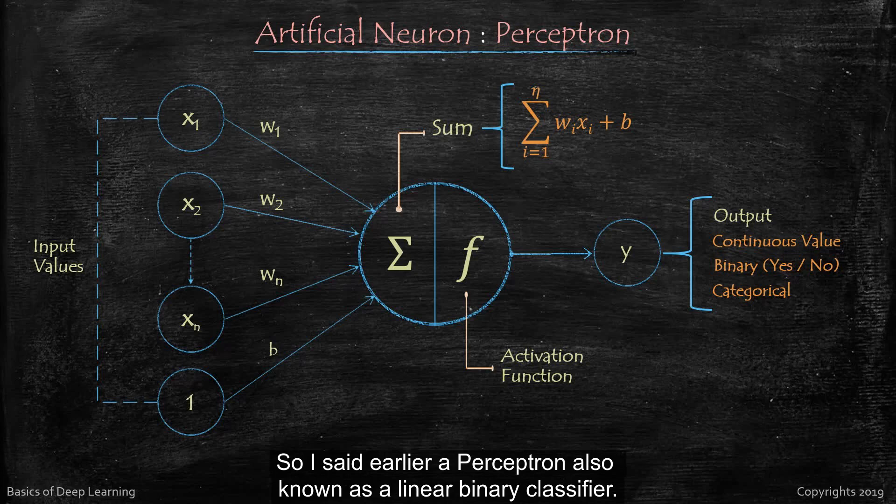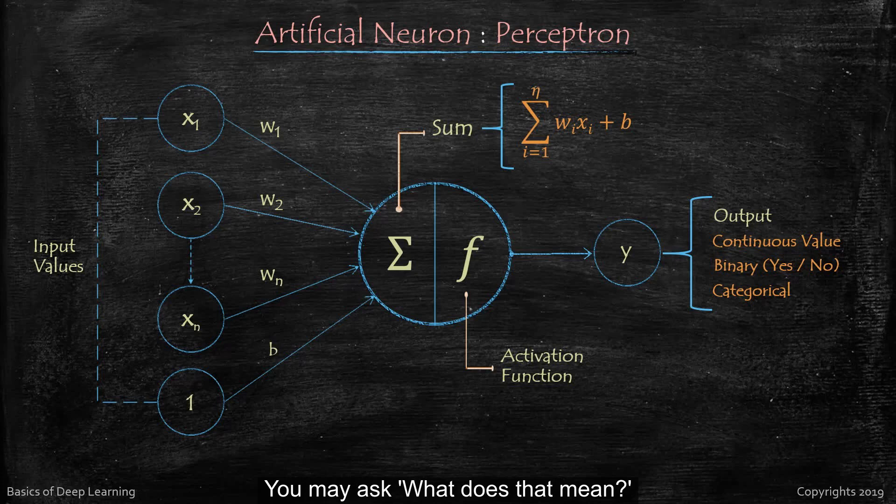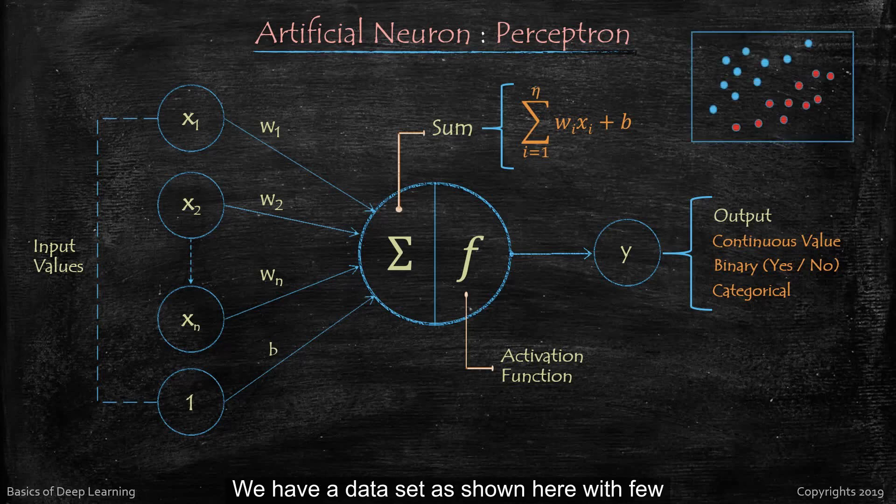So as said earlier, a perceptron also known as a linear binary classifier. You may ask what does that mean? So let's understand it by an example. We have a data set as shown here with few red and blue data points.